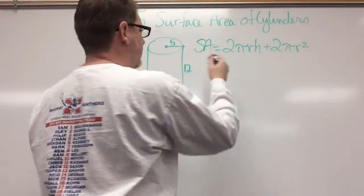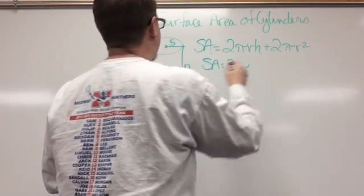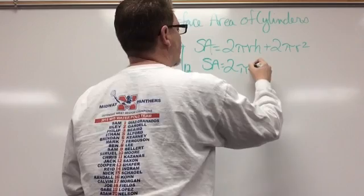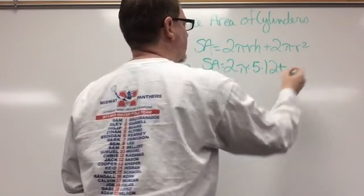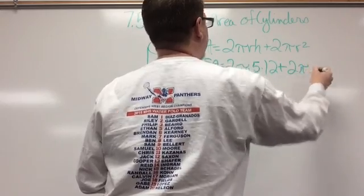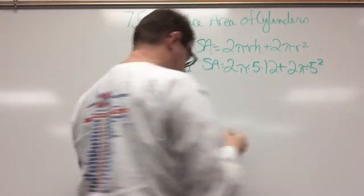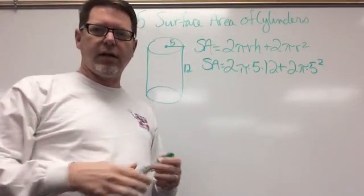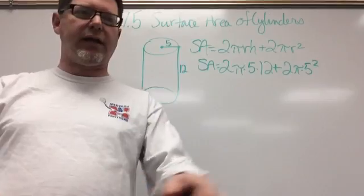So in this case, we know that the surface area equals 2π, and the R is 5, times 5 times the height, which is 12, plus 2π, and then R again, times 5 squared. And at this point, I need to move the camera, and at this point we're just going to plug it into the calculator.